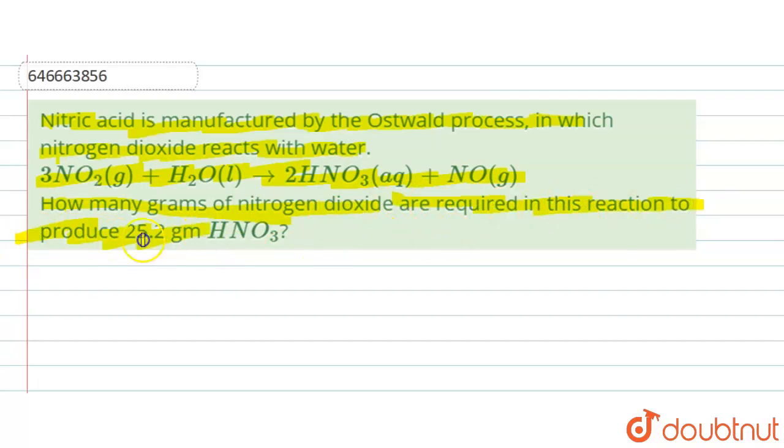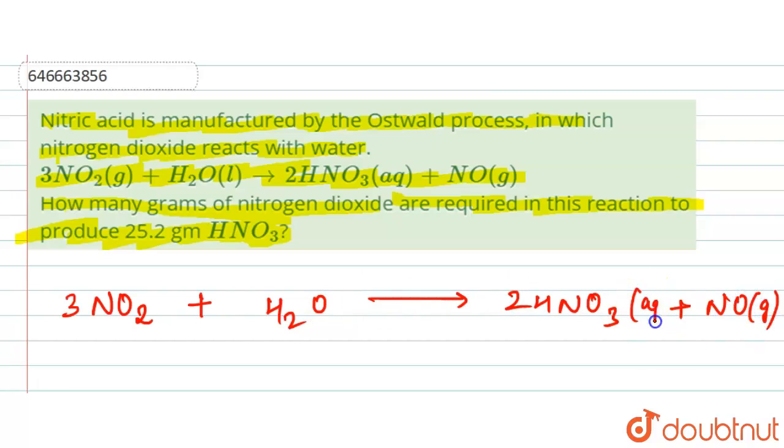First, let's write down the reaction: 3NO2 (g) + H2O (l) → 2HNO3 (aq) + NO (g). Here we have gas, aqueous, liquid, and gas phases labeled.